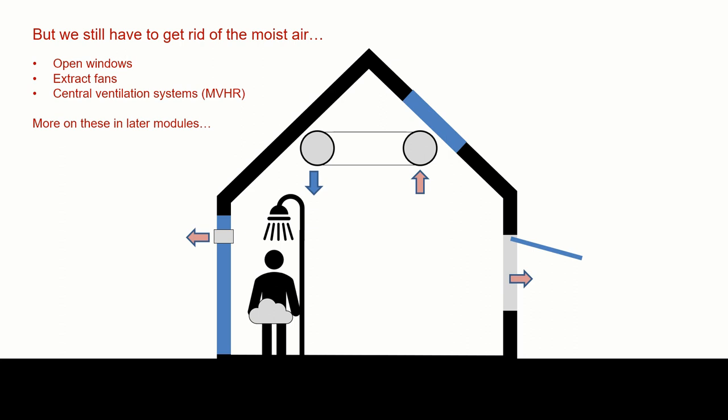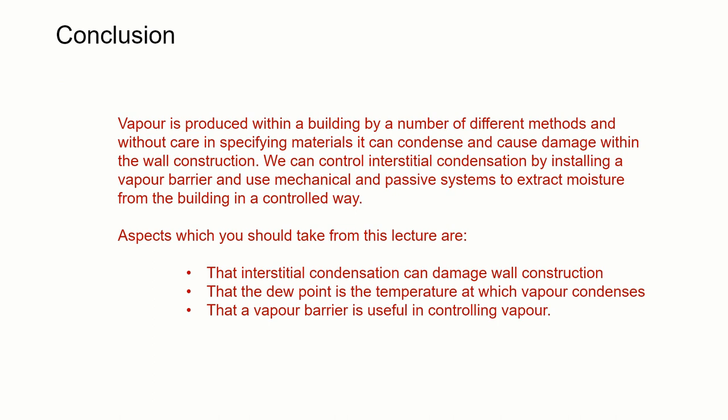The mechanical or active methods might be extract fans, which we would have in kitchens and bathrooms and utility rooms, or in newer built houses, it might be a central ventilation system like MVHR—mechanical ventilation and heat recovery. We'll look at those systems within the module later when we talk about services.